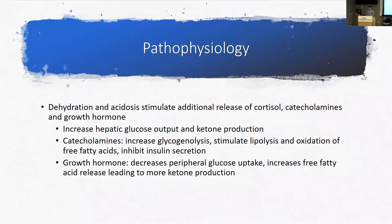Increased counter-regulatory hormones lead to ketone production. Catecholamines — epinephrine and norepinephrine — increase glycogen breakdown to release more glucose and stimulate breakdown of fatty acids, leading to increased ketones. All of these things also inhibit insulin secretion, creating a cycle: increased ketones, more glucose into the body, less ability to respond to that glucose, more breakdown of other fuel sources.